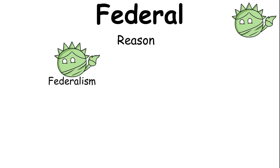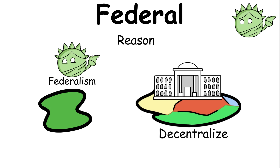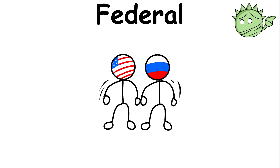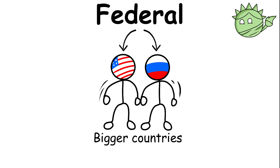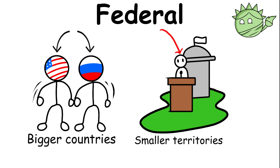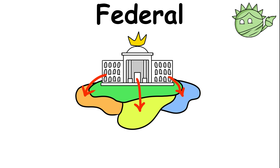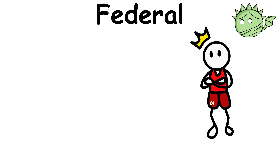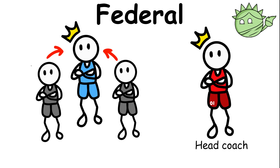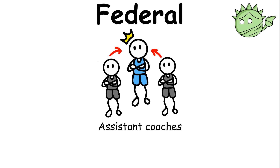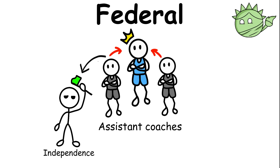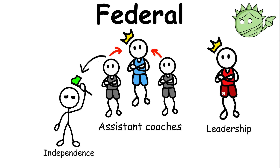The reason why federalism wants to decentralize some of the functions of the government is to promote efficiency. This is usually the case for bigger countries, because it's easier for smaller territories to govern themselves than allowing a central government to govern an entire nation. It's similar to how the head coach of a sports team needs to delegate roles to his assistant coaches. The assistant coaches have a sense of independence in their roles, but they are still under the overall leadership of the head coach.